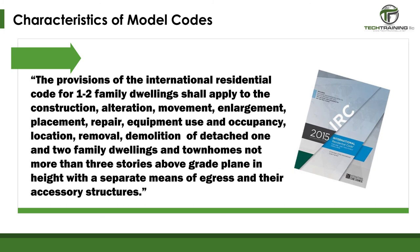First, they have a clear scope. The scope defines exactly when the code should apply — including the kinds of buildings, the kind of work, and the systems covered. For example, the scope of the International Residential Code is very detailed and states: 'The provisions of the International Residential Code for 1 and 2 Family Dwellings shall apply to the construction, alteration, movement, enlargement, placement, repair, equipment use, and occupancy, location, removal, demolition of detached 1 and 2 Family Dwellings and townhouses, not more than 3 stories above grade plane in height, with a separate means of egress and their accessory structures.' As you can see, the scope is very clear as to where this code applies.